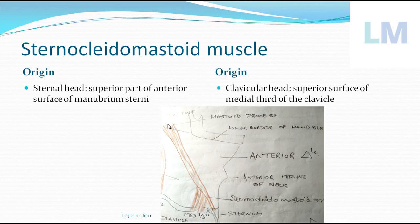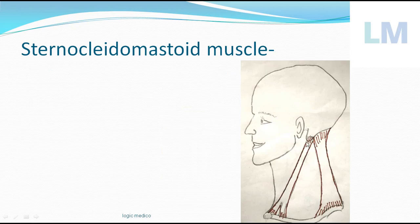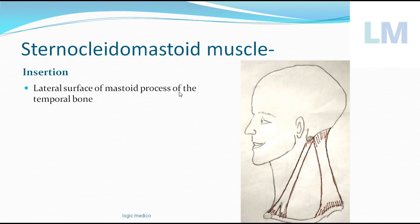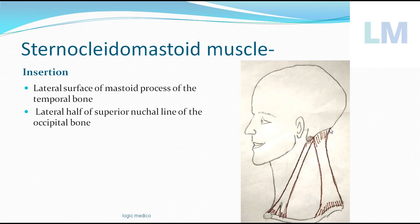Both heads join together and travel upwards and backwards to attach to the mastoid process. Most students know only the lateral surface of the mastoid process of the temporal bone as the insertion. However, there is an additional insertion: the lateral half of the superior nuchal line of the occipital bone. This superior nuchal line marks the junction between the scalp and the neck. Knowing this additional insertion makes you stand out in examinations.